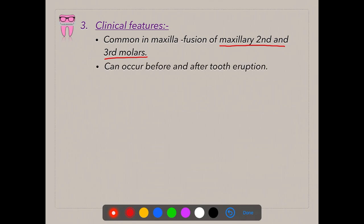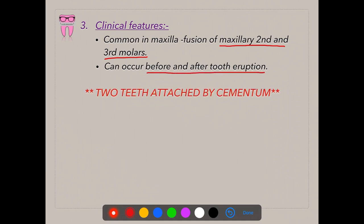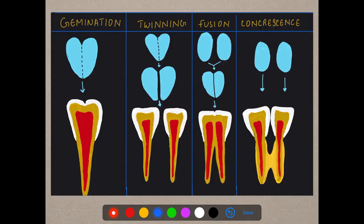Concrescence can occur before or after tooth eruption. In concrescence, you would see two teeth attached by cementum. Fusion was attachment of teeth by dentin, whereas concrescence is attachment of teeth by cementum. Germination, as a reminder, is an incomplete formation of teeth by invagination of a single tooth germ.